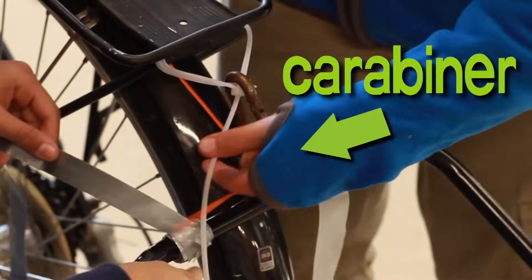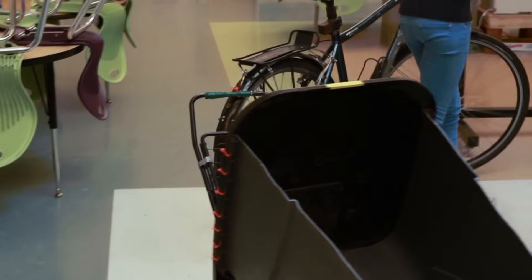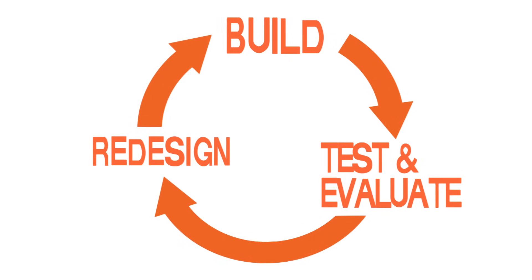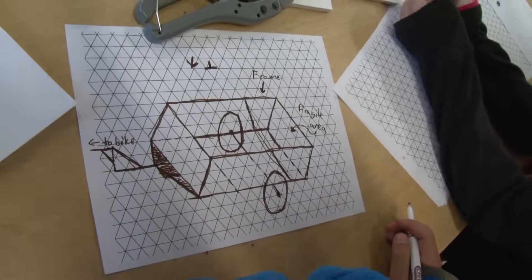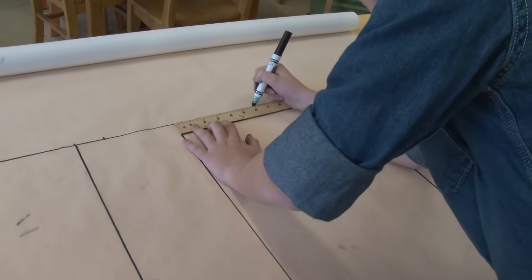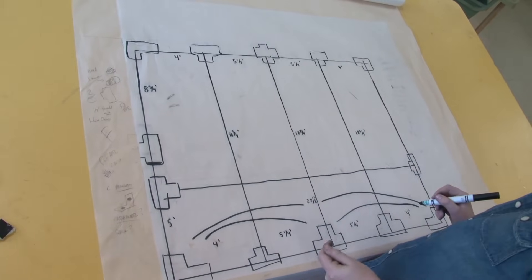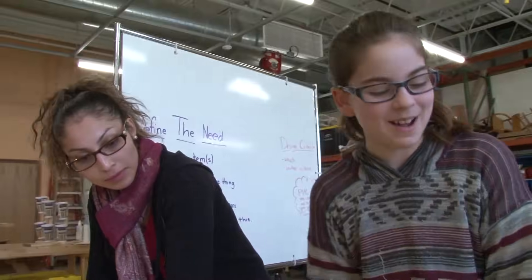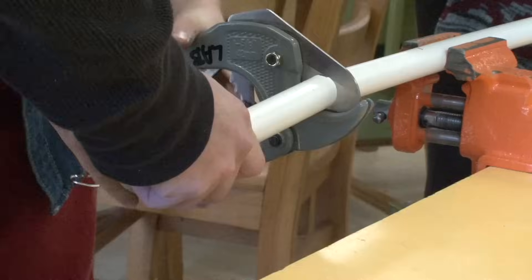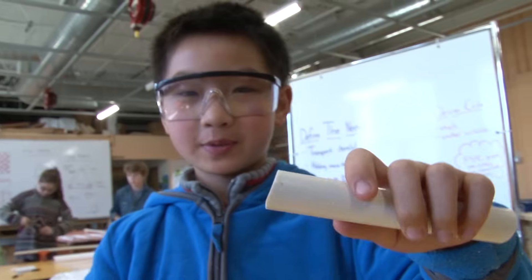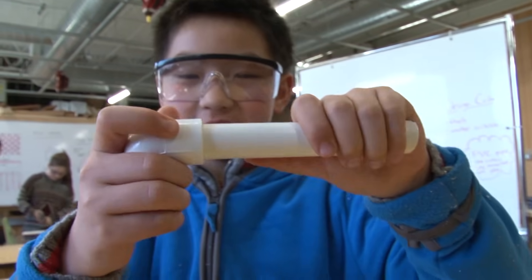Now the trailer pivots. This is the heart of the design process — the cycle of testing, evaluating, redesigning, and then repeating the process until the design is successful. Now we are starting work on our PVC pipe design. Elliot measured some grocery bags and then made a scale drawing. A scale drawing is when you make a drawing to the size of the actual thing you're making. I'm taking the measurements from the drawing that Elliot made and marking them down on the PVC pipe.